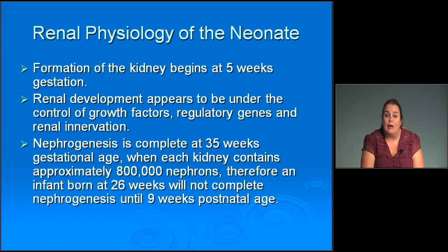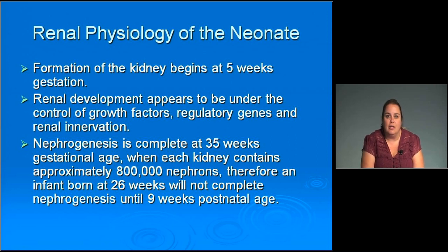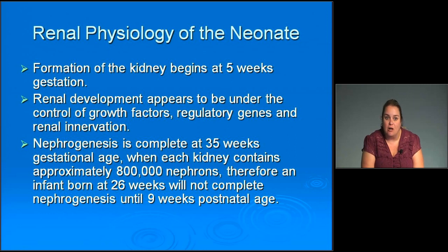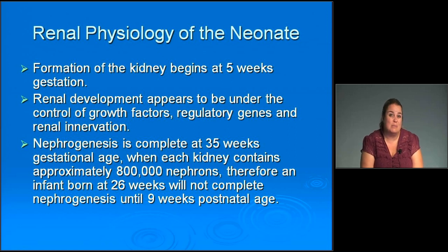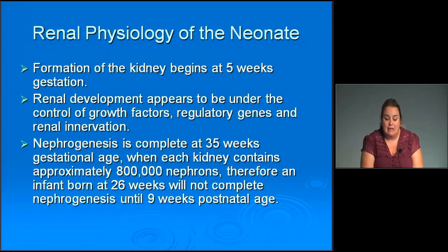The kidney begins to form around five weeks gestation. Development appears to be under the control of growth factors, regulatory genes, and renal innervation. Nephrogenesis is complete at 35 weeks gestation, when each kidney has 800,000 nephrons. An infant born at 26 weeks won't complete nephrogenesis until nine weeks postnatal age, so the kidney continues developing while the infant is in our unit.